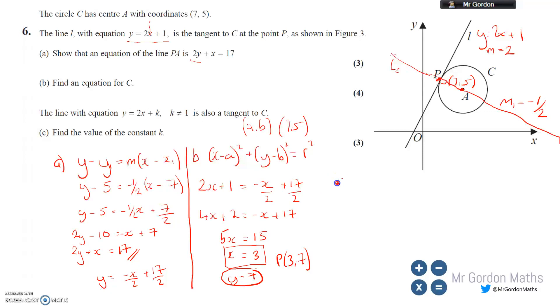Now I need the distance between the two points. Point P is (3,7) and point A, the center of the circle, is (7,5). I'll turn this into a right-angled triangle. Difference between x-values: 3 to 7 is 4. The y-value: 5 to 7 is 2. Using Pythagoras: 2²+4²=4+16=20, so the radius is √20.